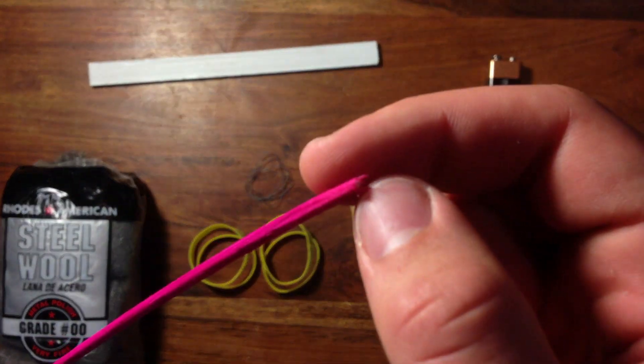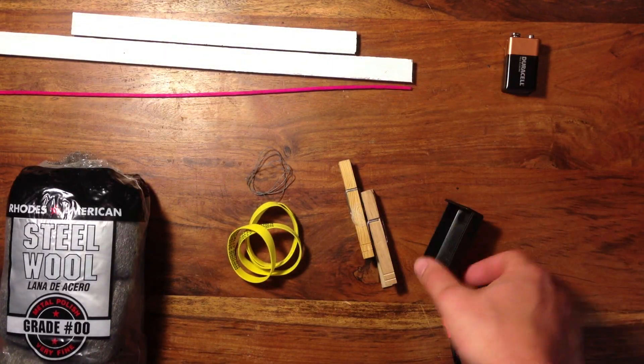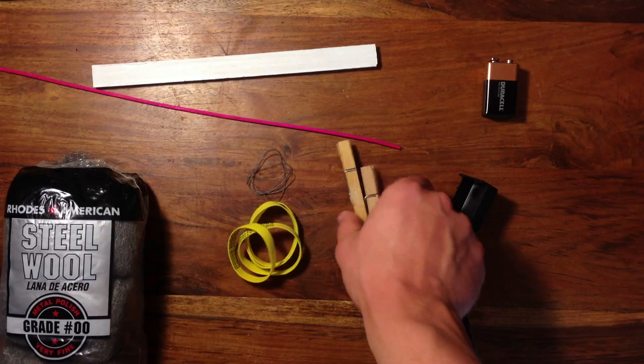Also, some rubber bands, some wooden skewers, a nine-volt battery, a nine-volt battery clip with a switch, two clothespins, and some tin foil.